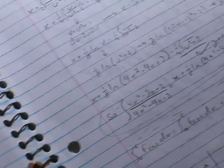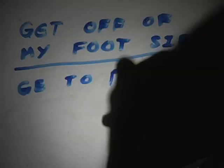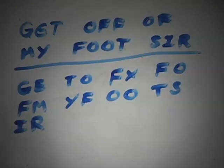Plain text: 'get off of my foot sir.' Steps to obtaining ciphertext. Step 1: break the message into letter pairs — G E T O F F O F M Y F O O T S I R. Step 2: no letter can be paired with itself; we pair it instead with an X — G E T O F X F O F M Y F O O T S I R.